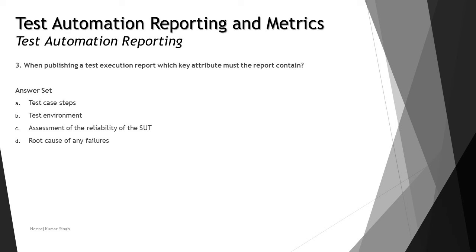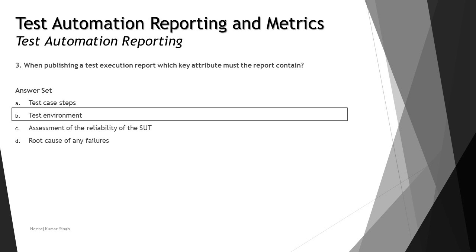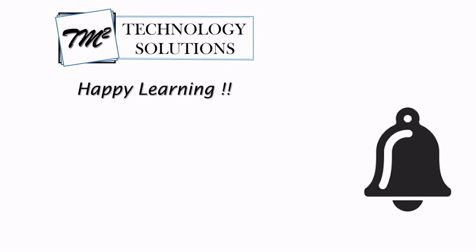Option D — root cause of any failures — would be included after the defect has been analyzed by the development team and would appear in the defect report, not the test execution report, so it can be ruled out. Option C — assessment of the reliability of the SUT — could be a secondary outcome derived from the report, but is not a key attribute to be included. Option A — test case steps — are too specific and would belong to test case documentation rather than a test execution report. Option B — test environment — is indeed a key attribute, capturing what environment was used for the execution. The right answer is B: test environment.